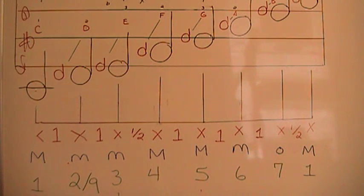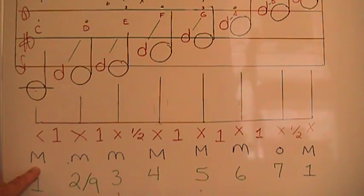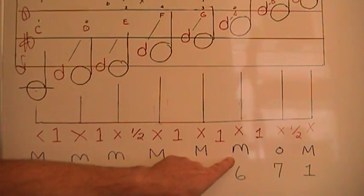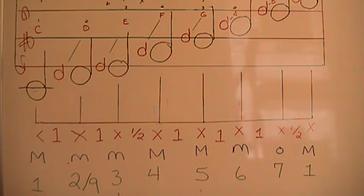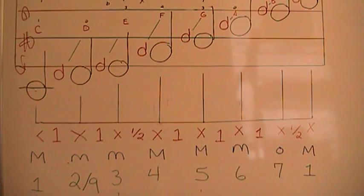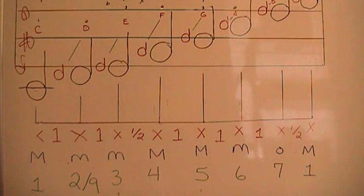Now, for the number system, its diatonic chord pattern — more on this coming up — is major, minor, minor, major, major, major, diminished, major. So if we can memorize these two formulas — whole, whole, half, whole, whole, whole, half — and major, minor, minor, major, major, minor, diminished, major — we are going to show you how you build the chords along the number system.